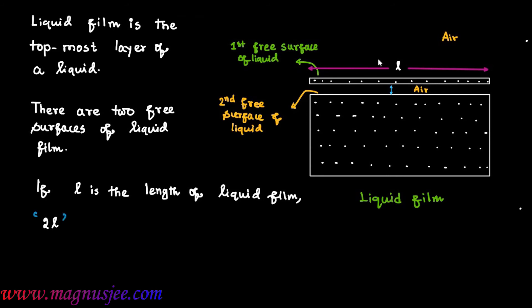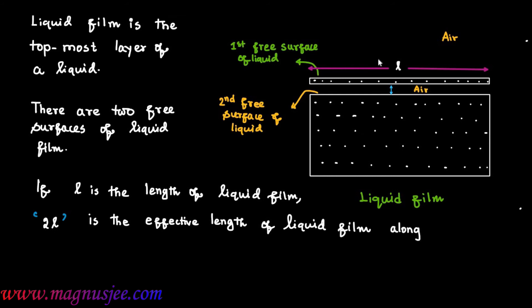...then 2L is the effective length of the liquid film — the effective length along which the liquid is in contact with air.